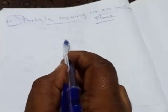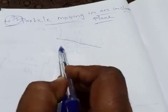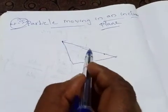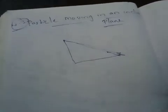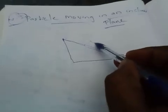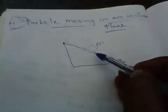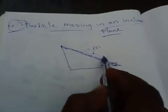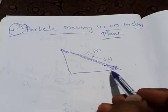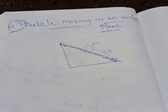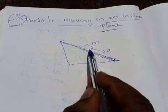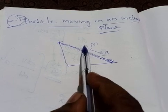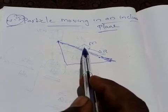Assume that this is an inclined plane — an object kept at an angle. On this inclined plane one mass is kept. This is a frictionless smooth surface. When a mass is kept on this inclined plane, you know that it moves with an acceleration A in the downward direction along the plane.